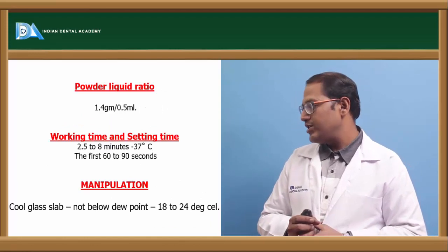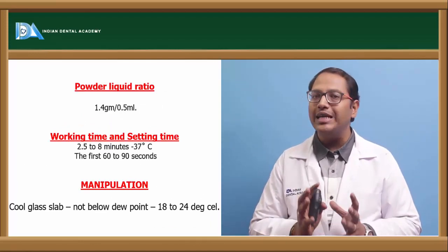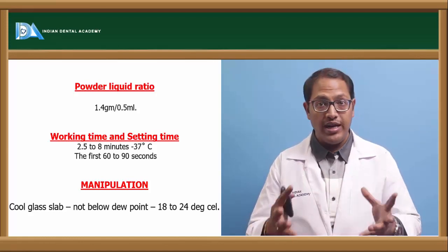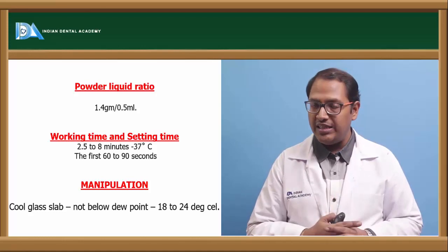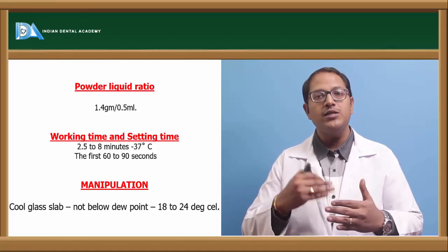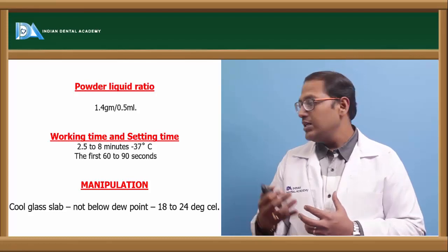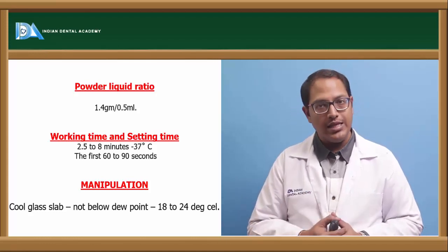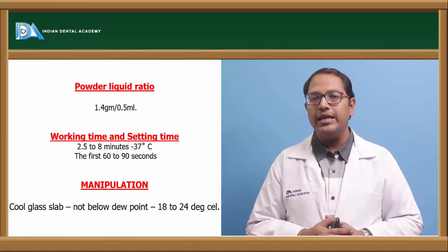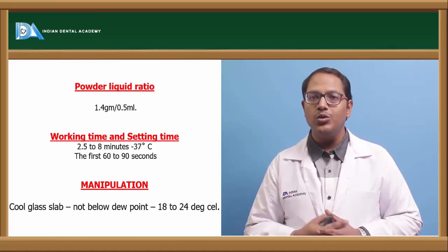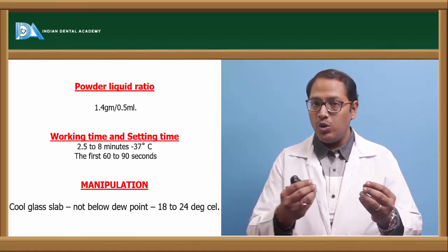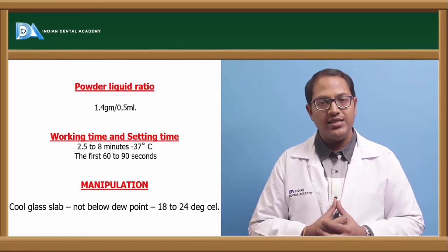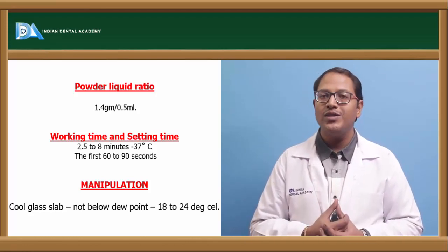Manipulation of zinc phosphate cement requires a cool, dry glass slab. It should be cool but not too cold, and not wet. We should not go below the dew point — 14°C — and should keep within 18 to 24°C. If it is wet, water particles will react with the powder-liquid ratio and hamper the zinc phosphate reaction.